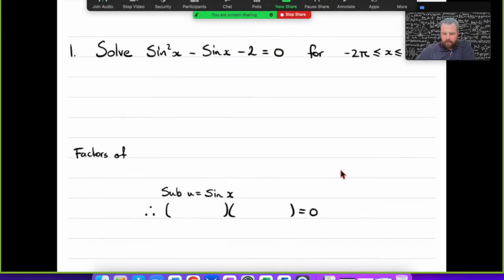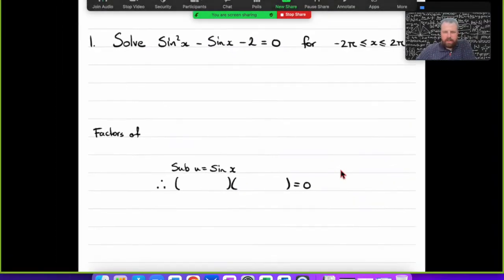This afternoon in class we're going to work on solving trigonometric equations, specifically looking at ones where we may need to factorize to get an answer. If we look at this first question, we see sin²x - sin x - 2 = 0.